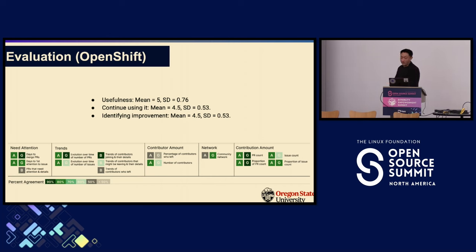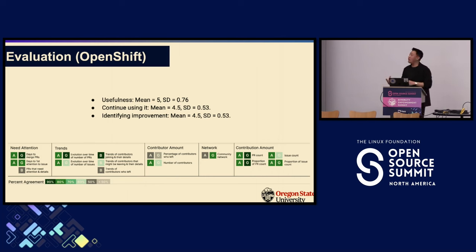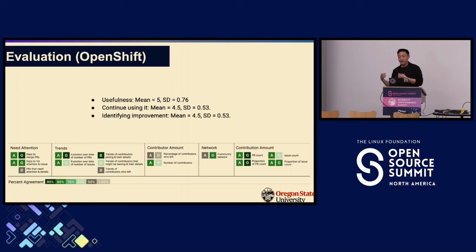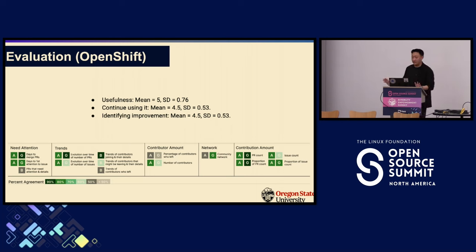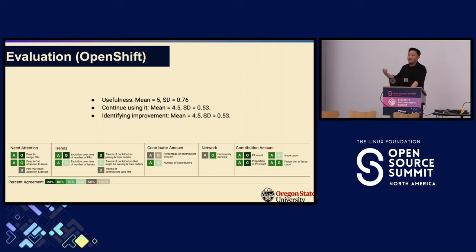Regarding our confirmatory study with OpenShift: participants agreed on the overall usefulness and satisfaction of using our tool. They reported that our tool was super useful in helping them identify areas for improvement and they would like to continue to use it. Participants were most likely to use the information in the 'need attention' and 'contribution amount' categories. We also found that different communities may have different preferences for different diversity lenses. Interestingly, our participants compared our tool with the existing tool they use, DevStats, acknowledging our tool's unique value.